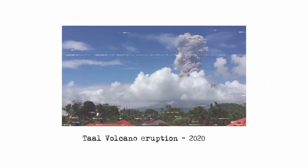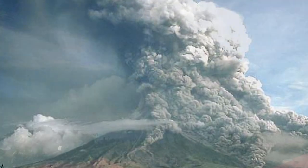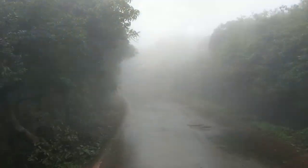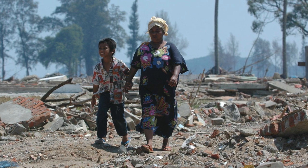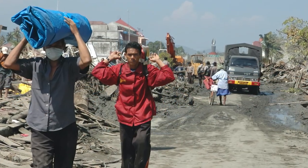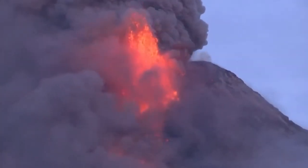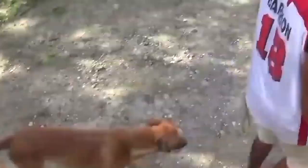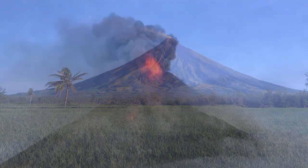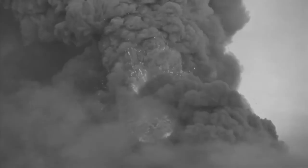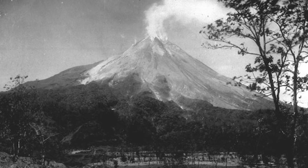The Taal Volcano eruption in 2020 was the first major eruption in the Philippines in over 40 years. It caused widespread ash fall, damaged crops and infrastructure, and forced the evacuation of over 300,000 people. As of June 13, 2023, the Philippine volcano Mayon has been erupting for over a week, forcing the evacuation of over 14,000 people. Known for its near-perfect cone shape, Mayon has erupted more than 50 times in the past 4 centuries, with its most destructive eruption in February 1841 killing 1,200 people.